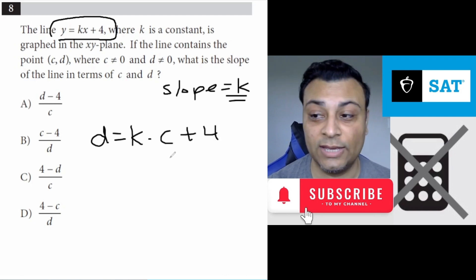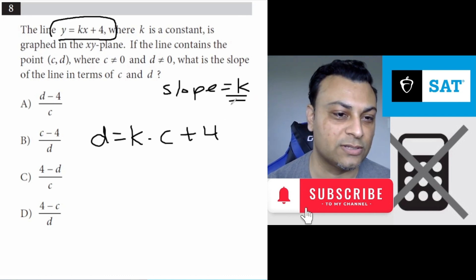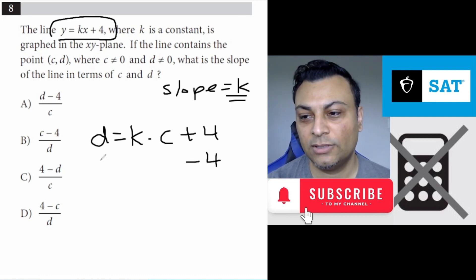And then we're solving for k because we want the value of the slope, and the slope is k. So we subtract 4 here, subtract 4 here. You'll get d minus 4 equals k times c.